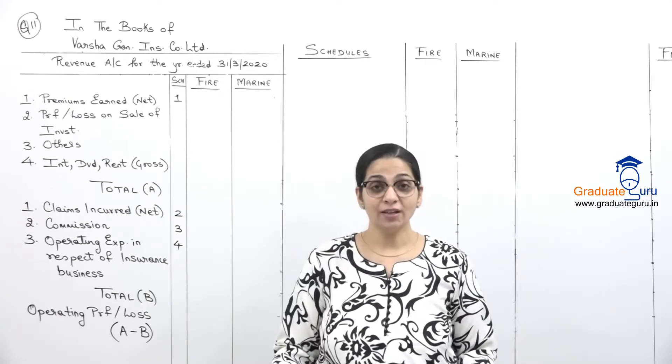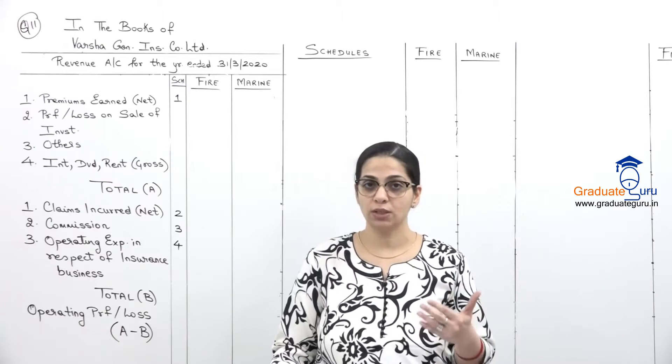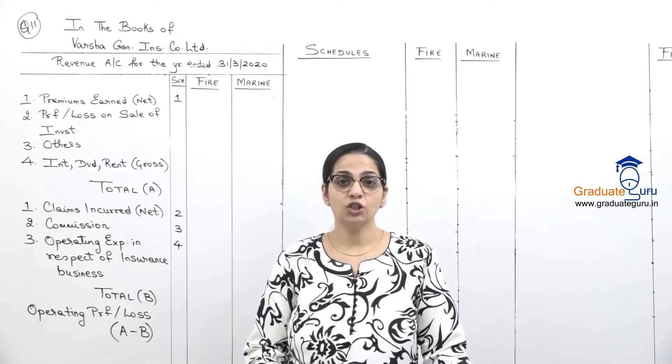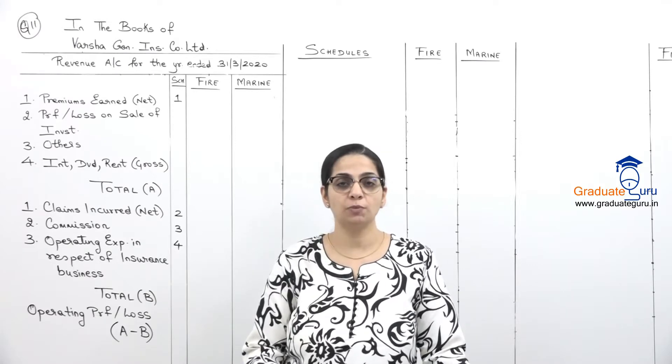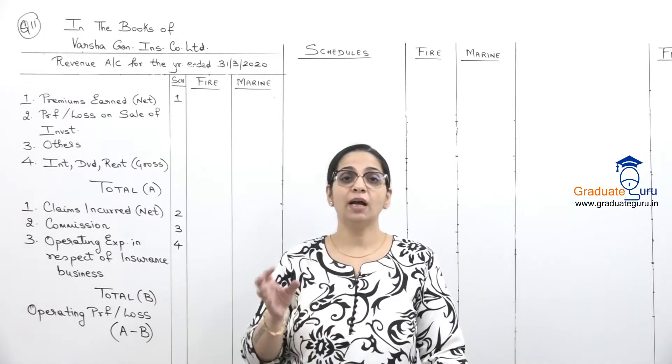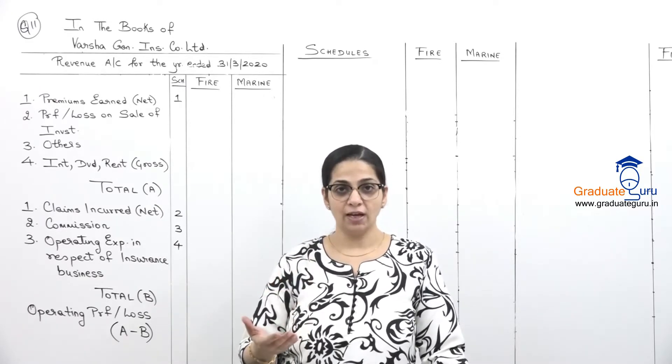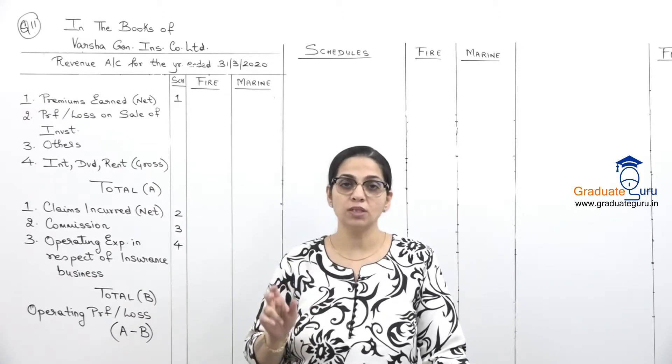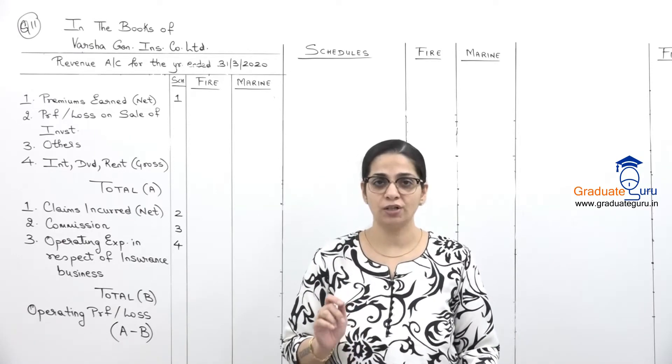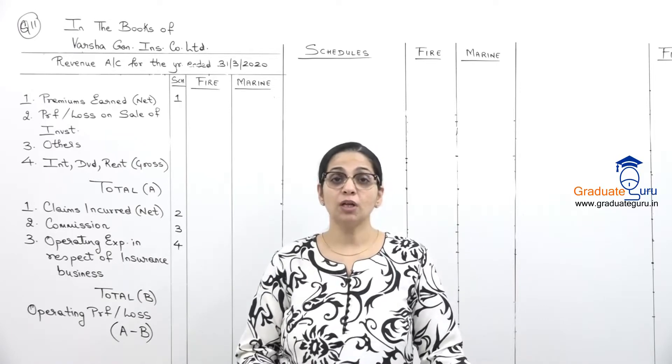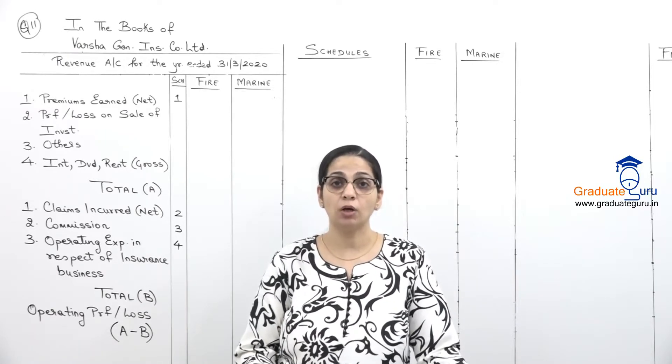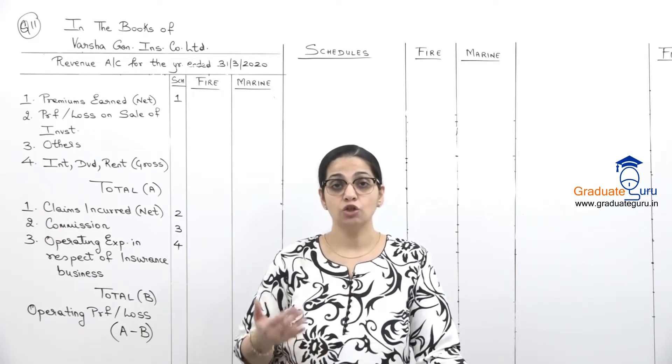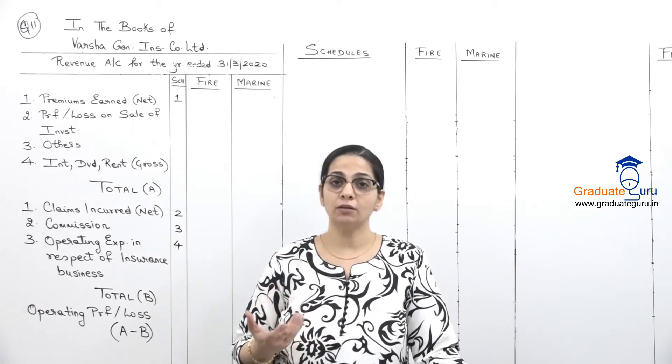From the following balances of Varsha General Insurance Company Ltd, prepare revenue accounts and profit and loss account for the year ended 31st March 2020. In case of fire insurance, there is going to be multiple insurance businesses. Here they have mentioned that for fire insurance, increase the additional reserve by 7.5% of net premium. Accordingly we will decide the rate of reserve.